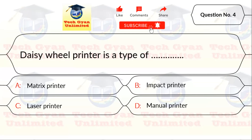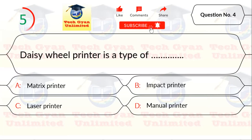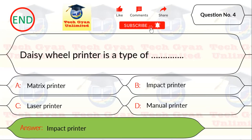Q4. Daisy wheel printer is a type of? The correct answer is impact printer.